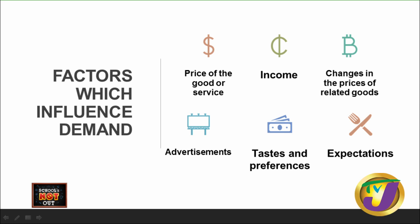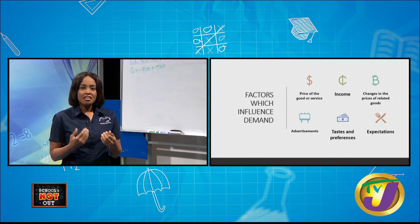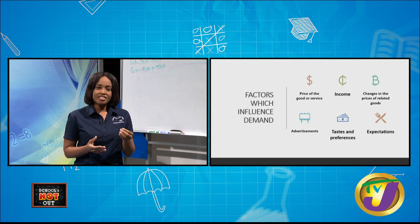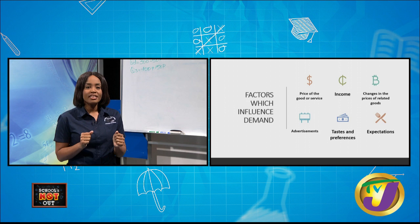Another factor which influences the demand for a good is income. If your income increases, typically you might tend to purchase more. An increase in income would usually mean you're able to afford more of a good or service, once the price remains constant. For example, if your lunch money is $200 and you can purchase one patty at $200, if your lunch money increases to $400, you can purchase two patties. Income plays a role in determining how much of a good or service you demand.